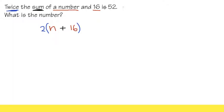And now, of course, this is equal to 52, and this is the equation, and we can just go ahead and solve this. So, distribute the 2 into the parentheses, and we will have 2 times N, that's just 2N, and 2 times 16, that's plus 32, and this is equal to 52.